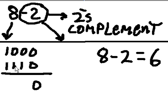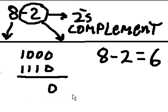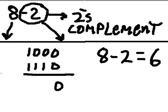0 and 0 is 0. It would be wiser if I move this over a bit, you'll see why. 0 and 0 is 0. 0 and 1 is 1. 0 and 1 is 1. 1 and 1 is 0 with a carry of 1.